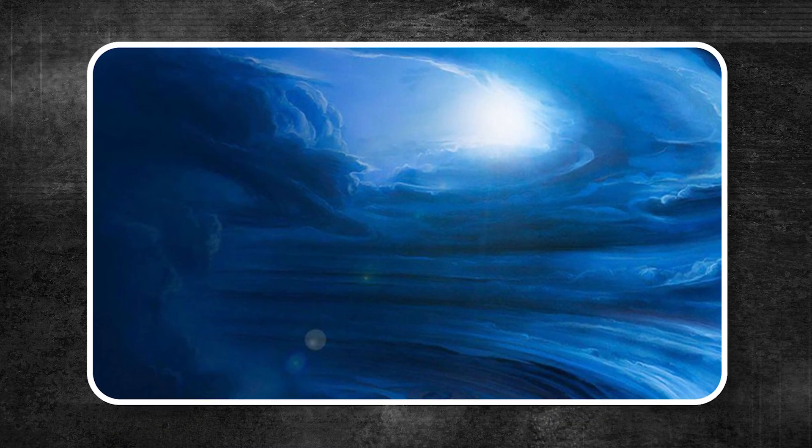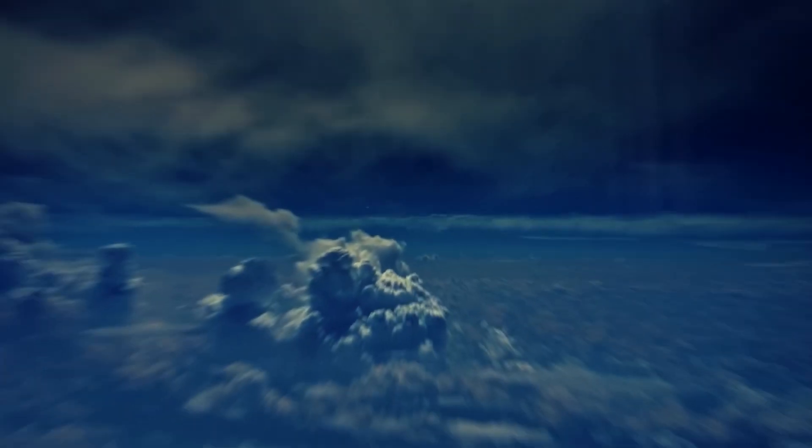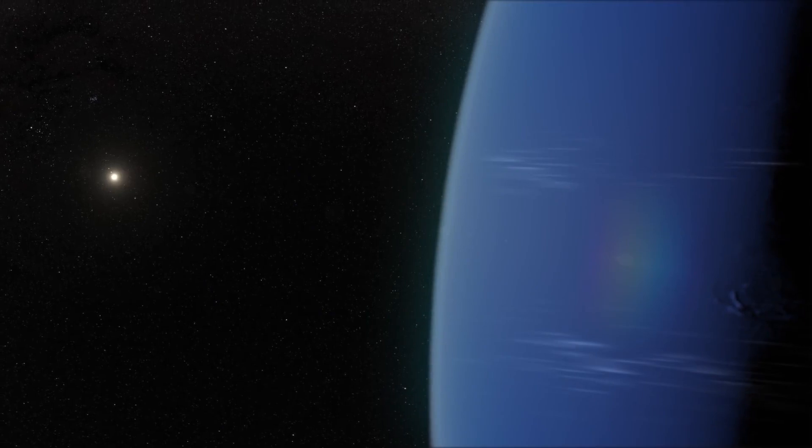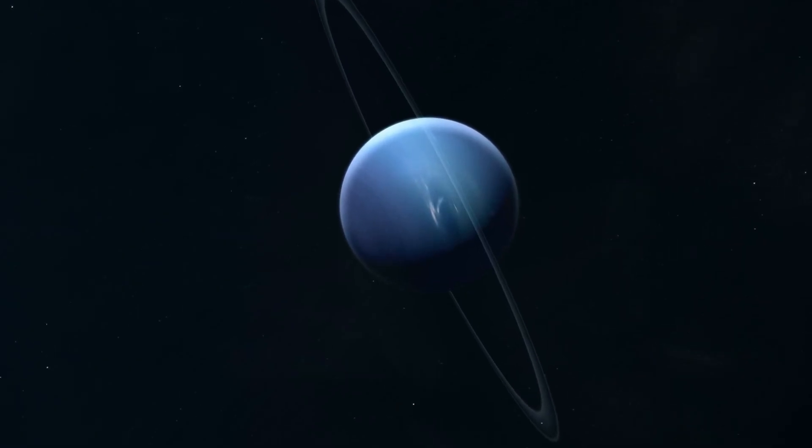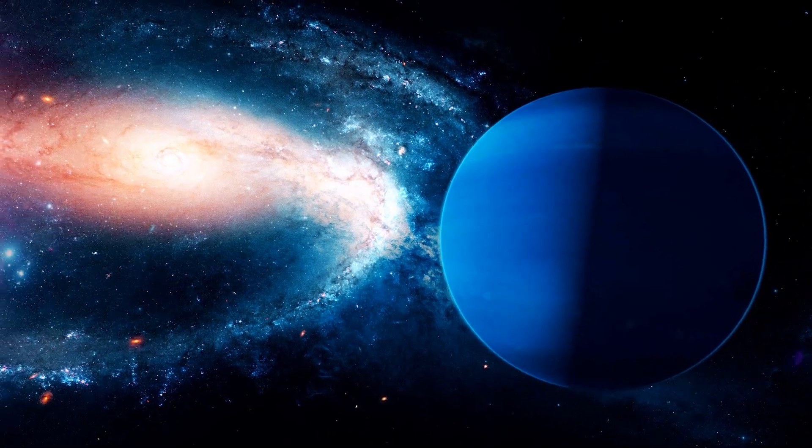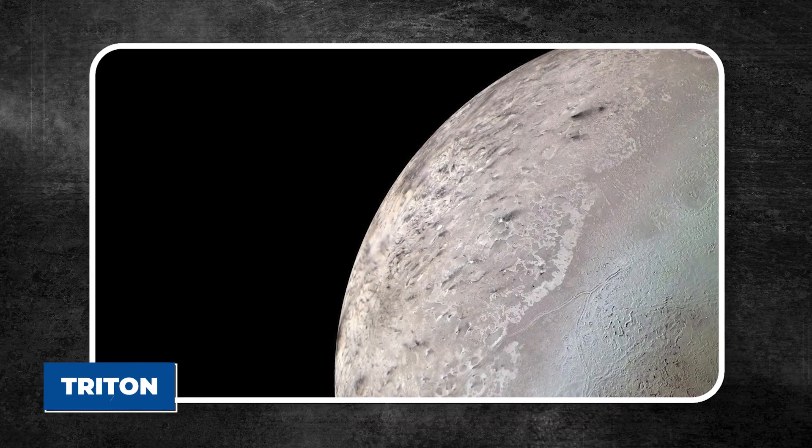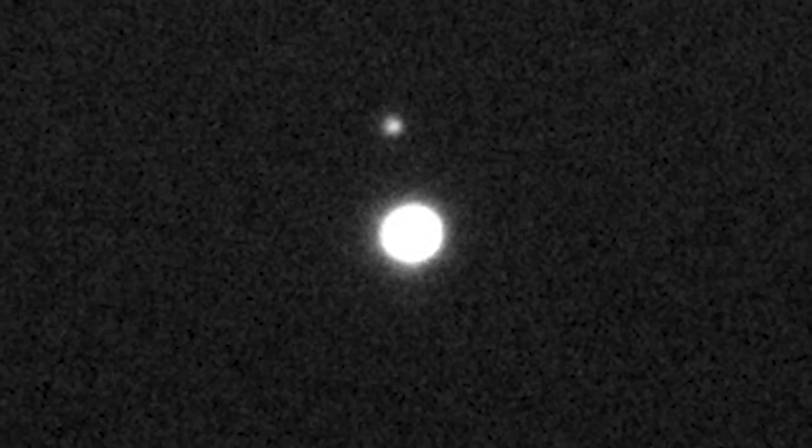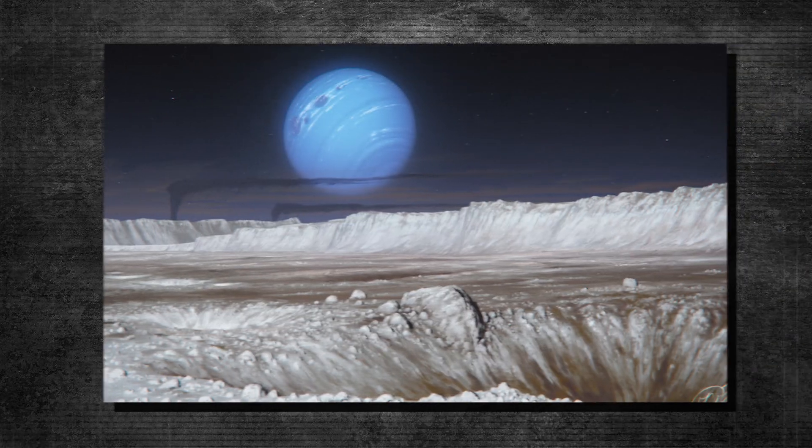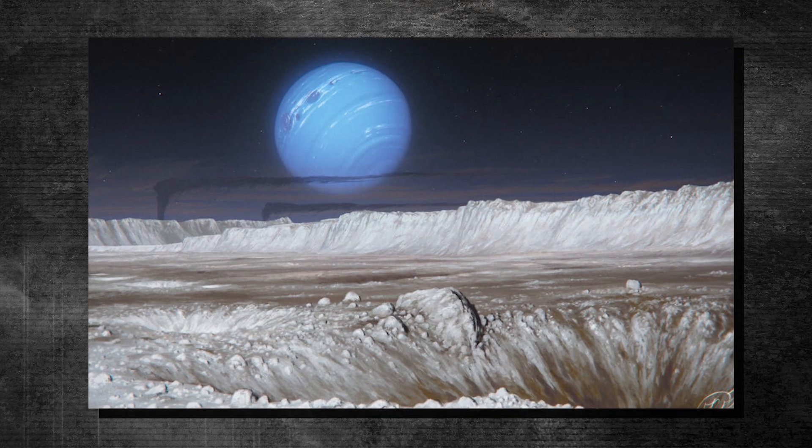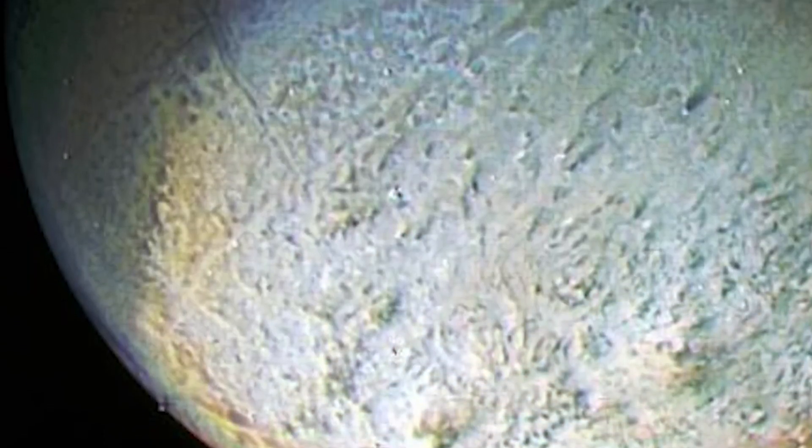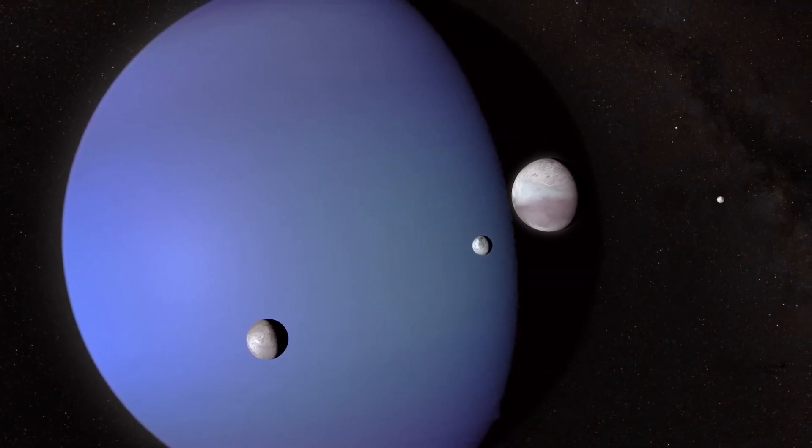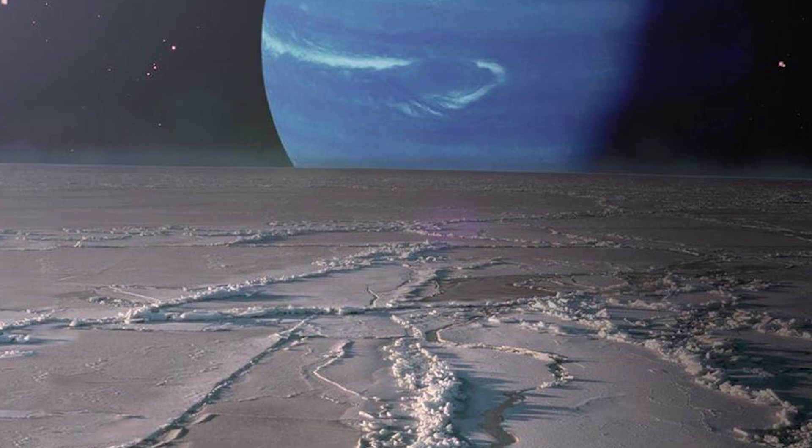This raises big questions about what's happening below Neptune's surface. Could there be heat sources or hidden processes powering these extreme storms? As researchers dive deeper, they encounter anomalies in the planet's magnetic field that defy current scientific understanding. Triton is unlike most moons in our solar system. It orbits Neptune in the opposite direction of the planet's rotation, suggesting it might have been captured from the Kuiper Belt. Even though temperatures on Triton drop to minus 235 degrees Celsius, making it the coldest known object in the solar system, its surface isn't lifeless.